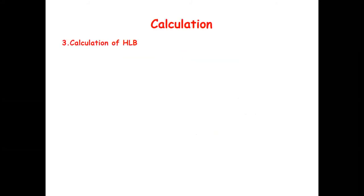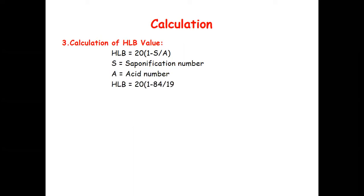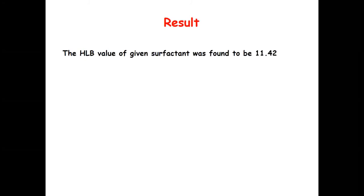Now for the final HLB calculation, the formula is HLB = 20 × (1 − S/A), where S is the saponification number and A is the acid number. Substituting: HLB = 20 × (1 − 84/196). After solving, the observed HLB value of the given surfactant is 11.42. In result, the HLB value of the given surfactant was found to be 11.42.